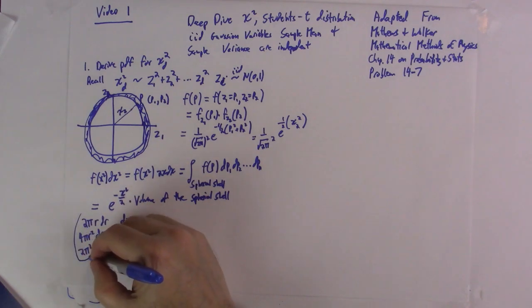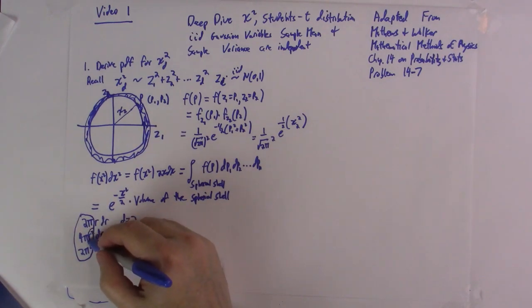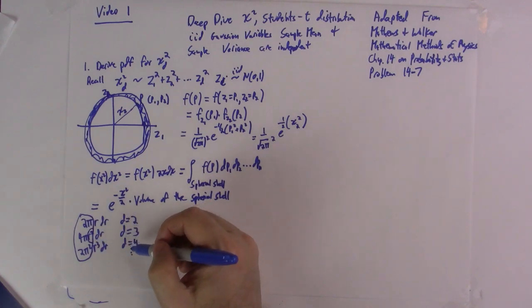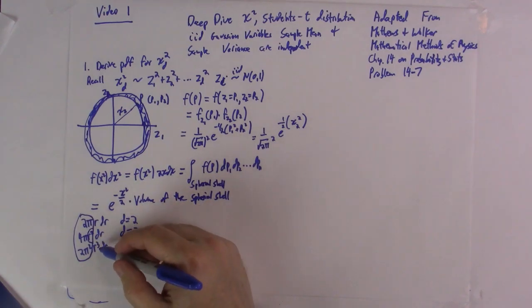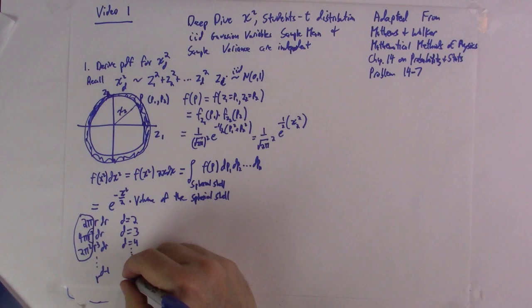Now, these particular constants we don't need. Physicists need them, but we don't need them because we're statisticians. And we'll normalize the probability distribution anyway. The important thing is that we're going to have r to the d minus 1 for d dimensions, for d degrees of freedom.